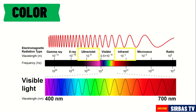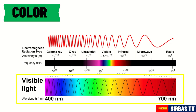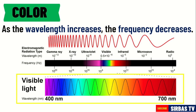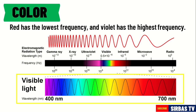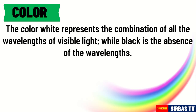Observe this illustration. As the wavelength increases, the frequency decreases. Red has the longest wavelength and violet has the shortest wavelength. Conversely, red has the lowest frequency and violet has the highest frequency. In general, the color white represents the combination of all the wavelengths of visible light, while black is the absence of wavelength.